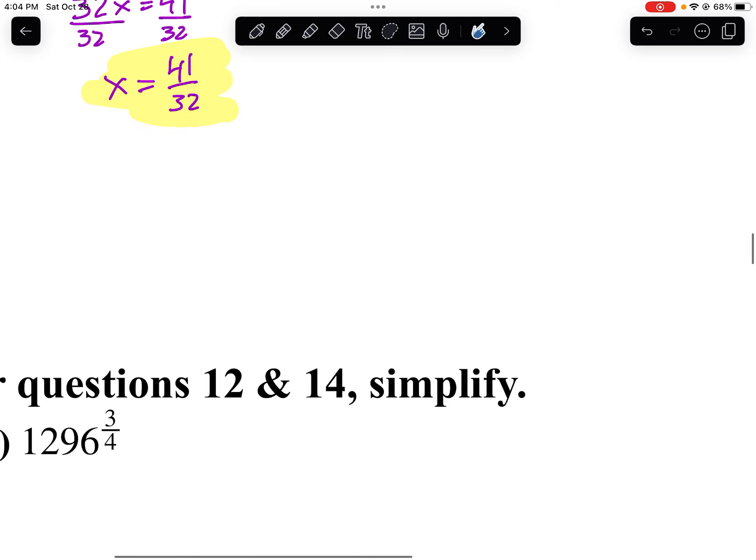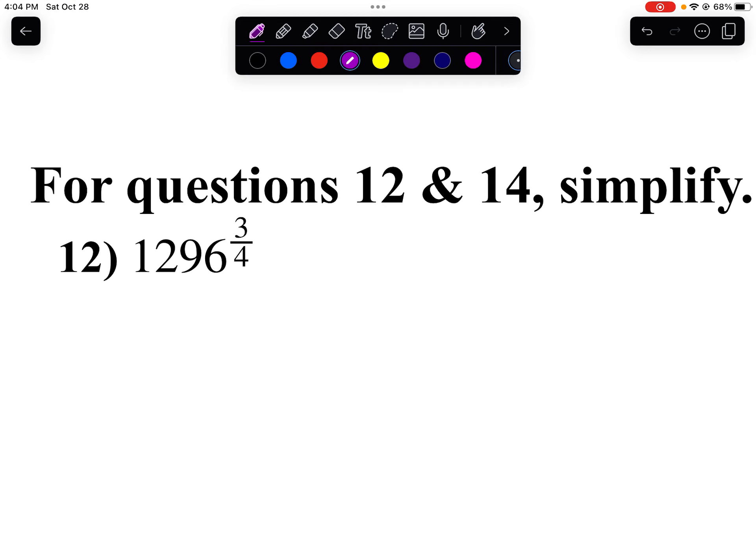Number 12. We want to simplify 1296 to the 3/4 power. So that means, remember my radical is my base, is my index. And then I take 1296 and I'll raise that to the 3rd power. So in other words, I want to find a number that when I take it to the 4th power, gives me 1296. Well, I know it's going to be not 1 or 2. I notice it ends in 6. Let's try 6 to the 4th power.